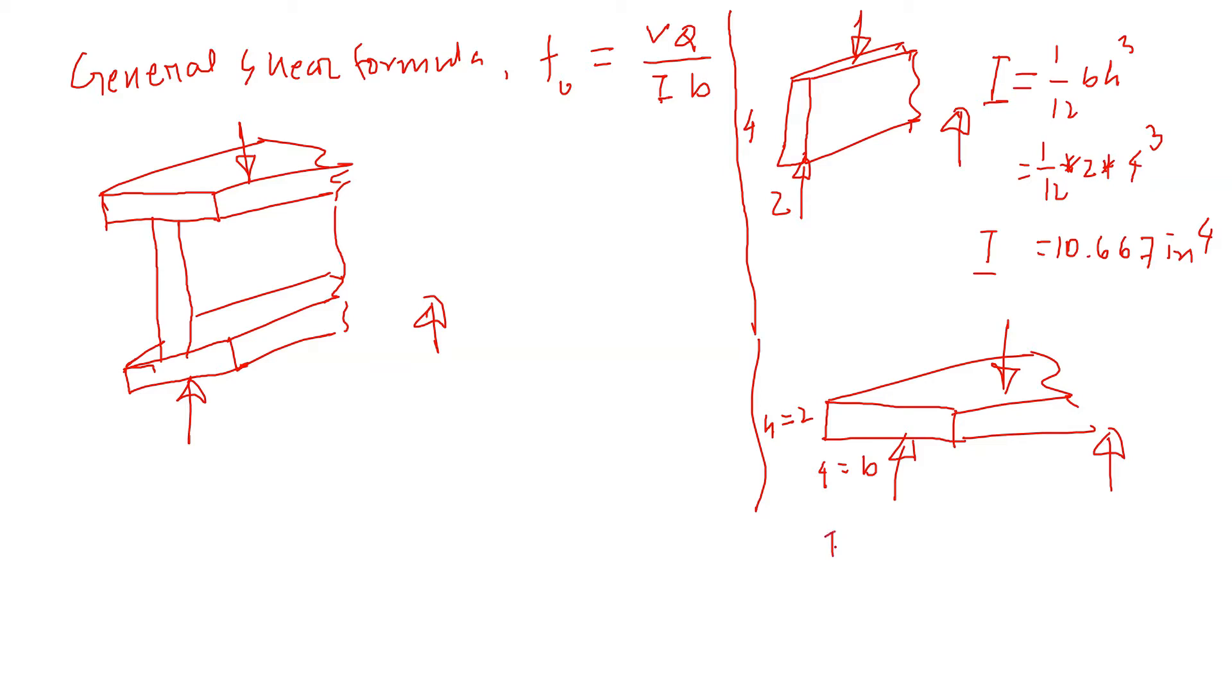Now, I equals 1 by 12 bh cube. We can calculate that 1 by 12, b is 4, h is 2 cube. So, we calculate that, it's going to be 2.667 inch power 4.